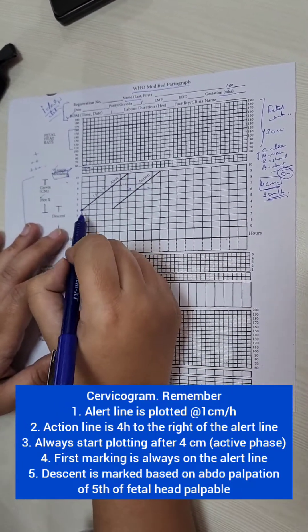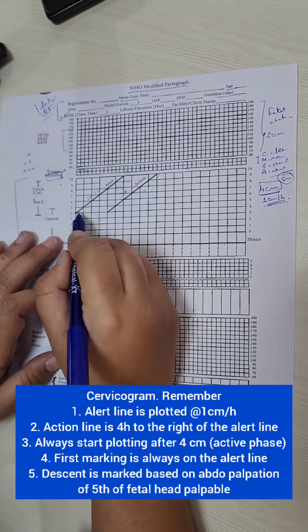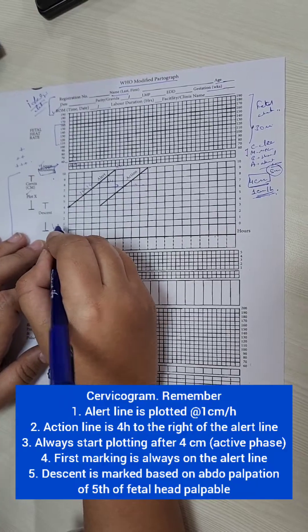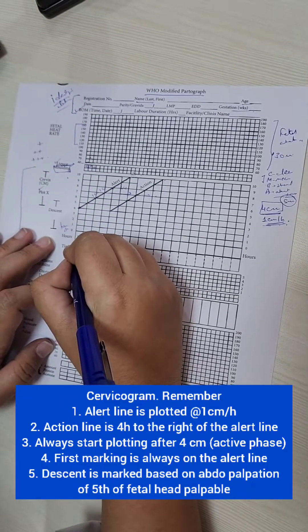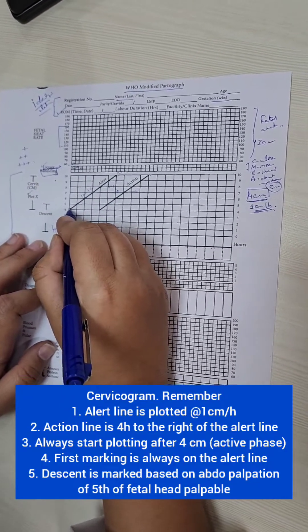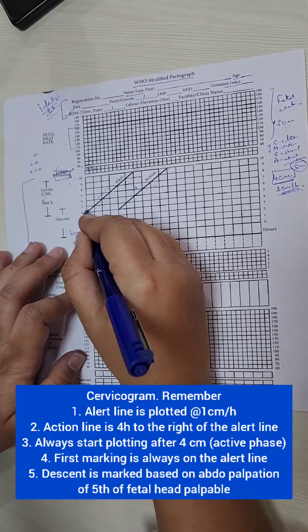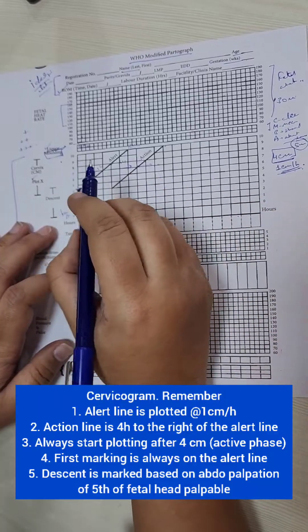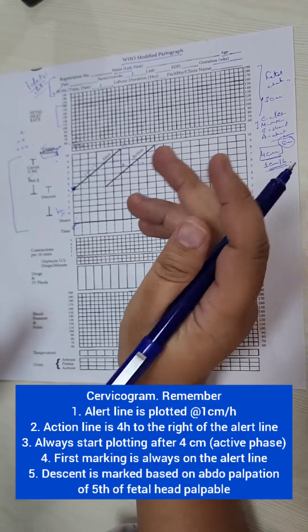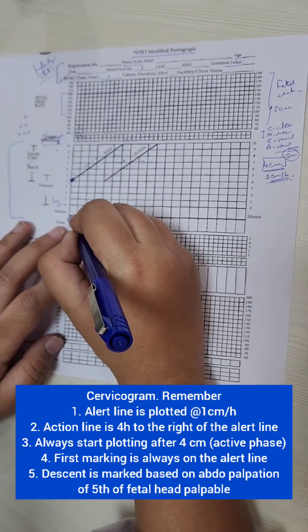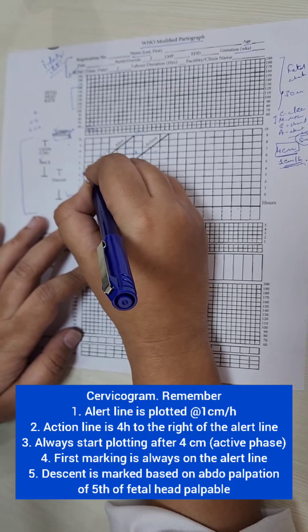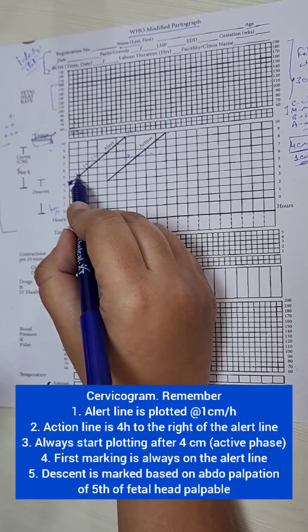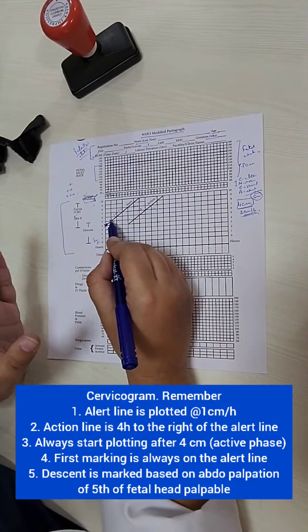Another important thing to remember, very very important, is how to plot the first point. So if a woman comes and she is 4 centimeters dilated, say at 8 a.m., I will write 8 a.m. here and the first marking is always on the alert line. So I put her cross here. Suppose she came at 8 a.m. and she was 5 centimeters. So I put 8 a.m. here and the first marking will be on the alert line which is here. So remember the first marking is always on the alert line.